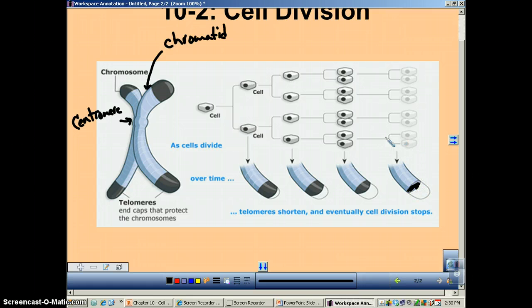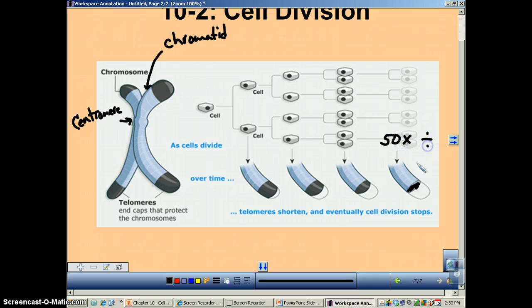This is approximately 50 times. So 50 times of cell division. Now it's too short. You cannot divide anymore. That's the end of it. So that's our definition of the Hayflick limit.